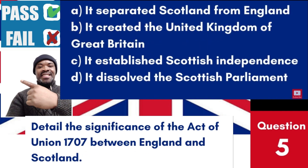Question 5: Detail the significance of the Act of Union 1707 between England and Scotland. a. It separated Scotland from England. b. It created the United Kingdom of Great Britain. c. It established Scottish independence. d. It dissolved the Scottish Parliament. Answer: b. It created the United Kingdom of Great Britain. The Act of Union 1707 merged the parliaments of England and Scotland, creating the United Kingdom of Great Britain.